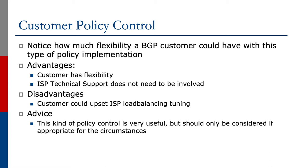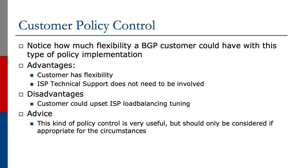In this case you've given customers a lot of flexibility in how they signal to the upstream what they want done with announcements. The advantage is that the customer has flexibility and ISP technical support does not need to be involved. The disadvantage is that this routing policy can upset your internal ISP load balancing tuning, and you need a well-informed customer who knows how to set these things correctly. This kind of policy control is very useful, but only if your customers understand BGP well enough to set these policies and have an actual need for it. In scenarios where you handle load balancing yourself and don't need to offer this downstream, customer policy control is not as useful.